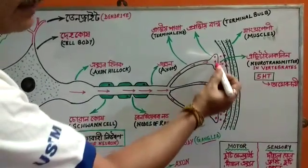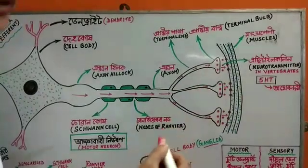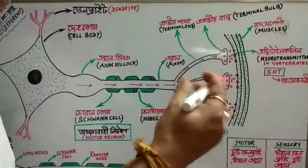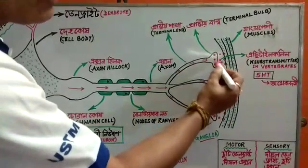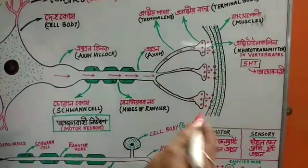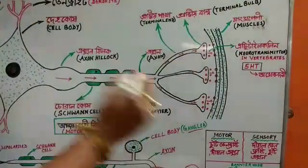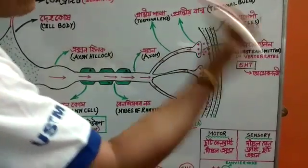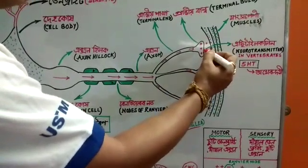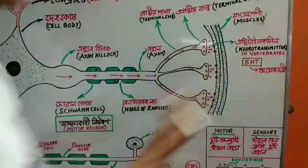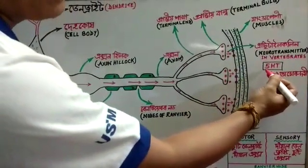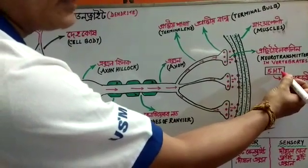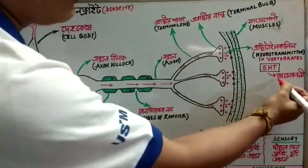As we continue, what is a neurotransmitter? If you have a neurotransmitter in vertebrates, you have Acetylcholine. This neurotransmitter called Acetylcholine will carry information from the terminal bulb to the muscle cells. We also have a neurotransmitter called 5HT, which is also a neurotransmitter involved in signaling.